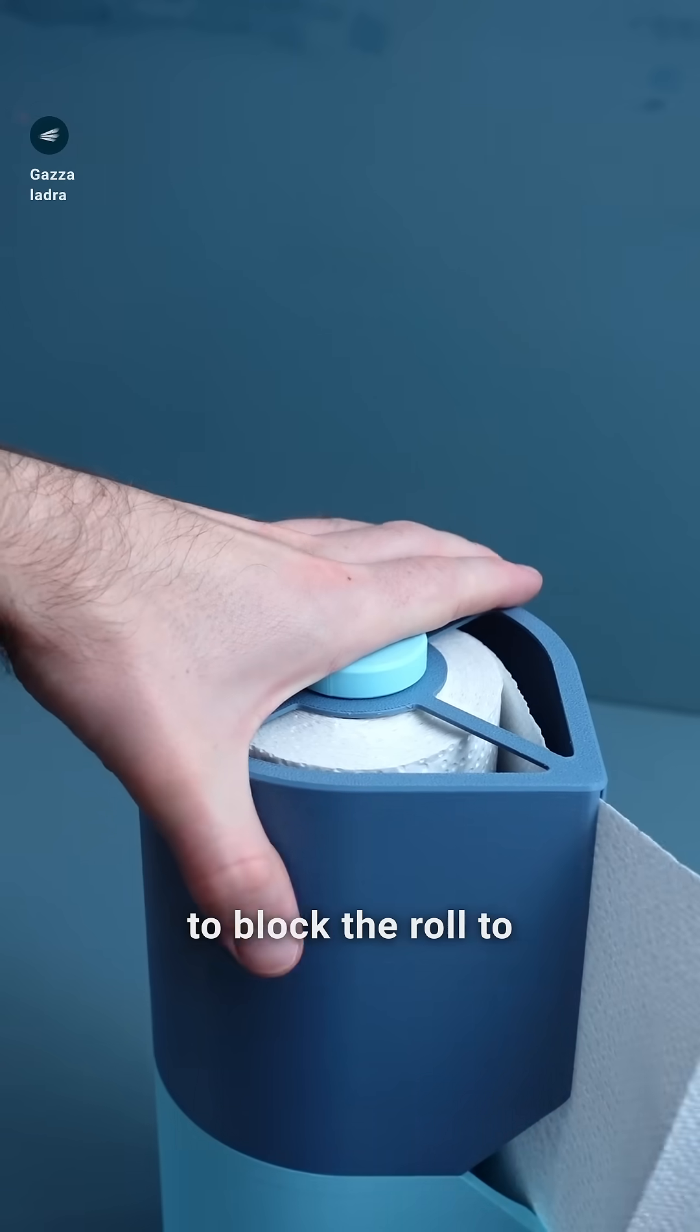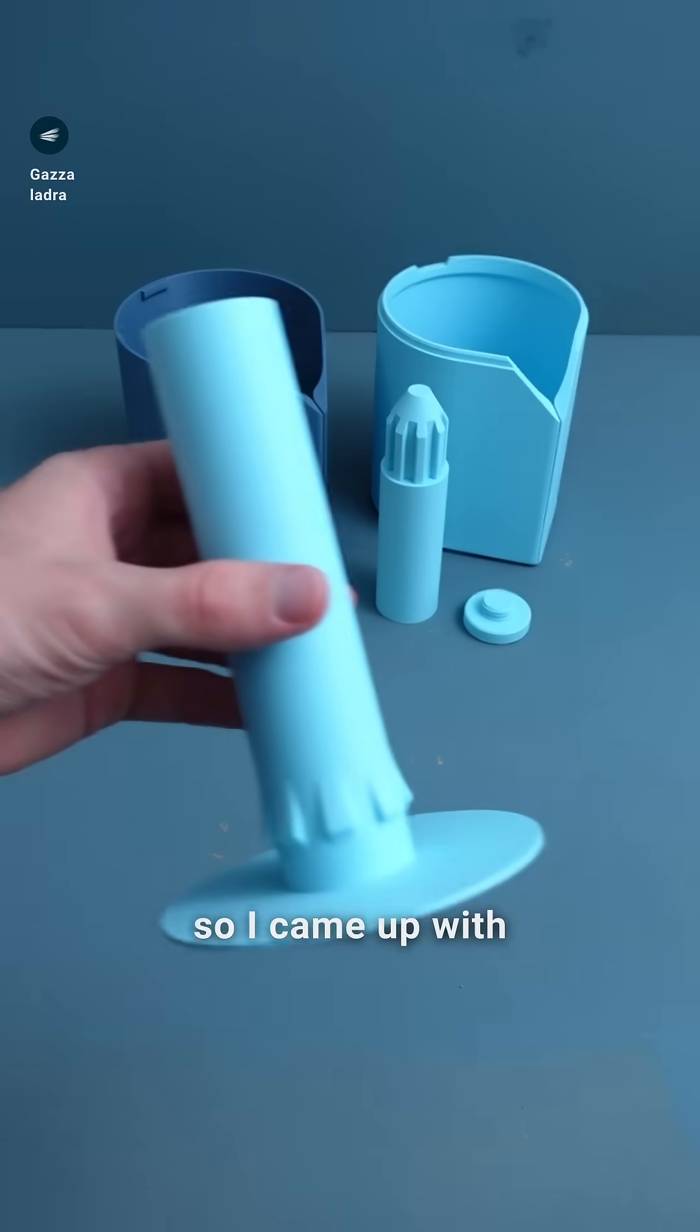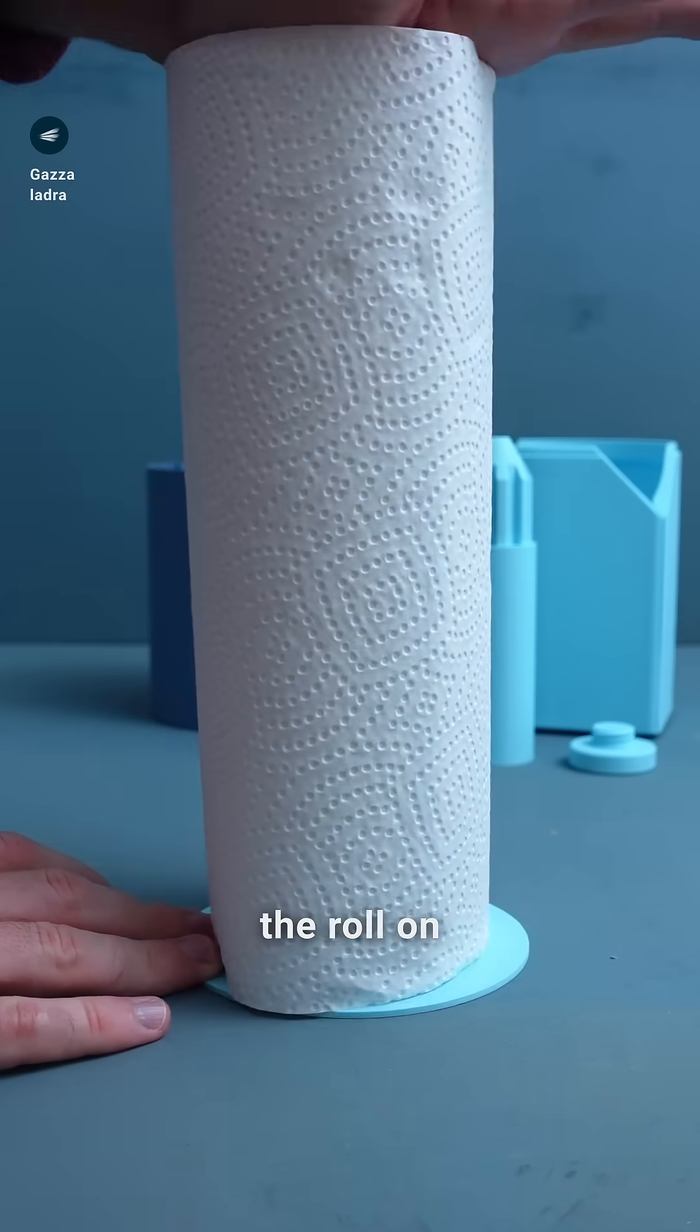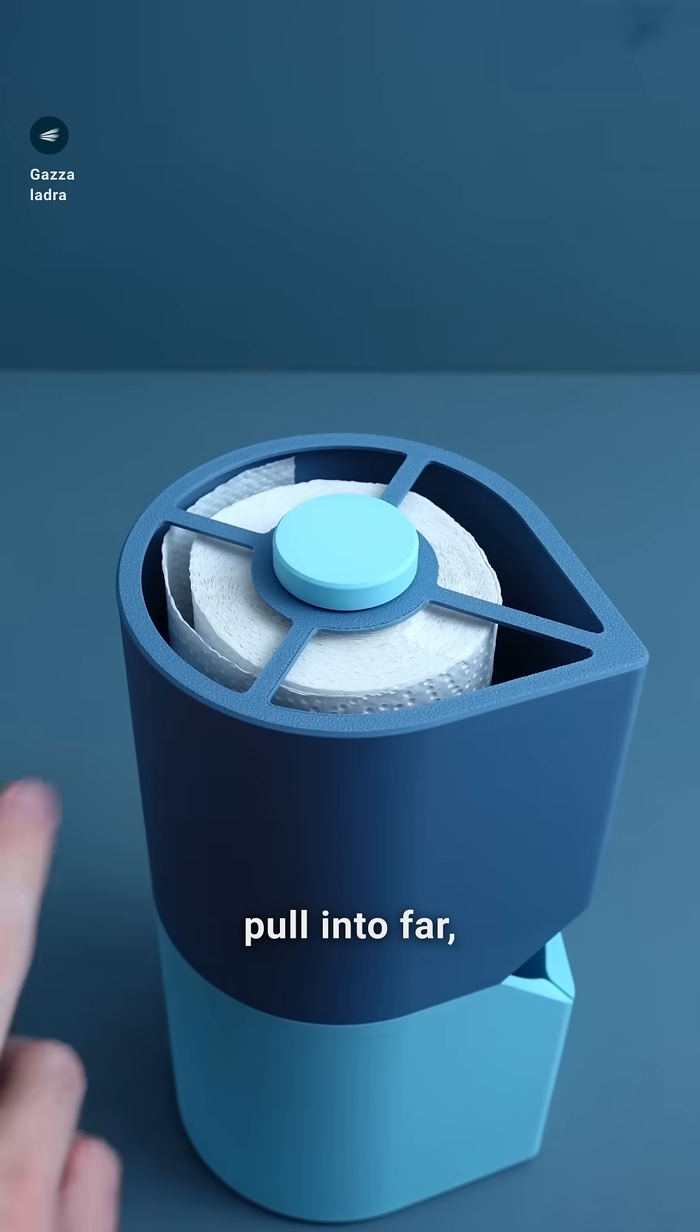I had to be able to block the roll to get a good tear-off, so I came up with a rotating inside where you press the roll on these edges. Since you might accidentally pull it too far,